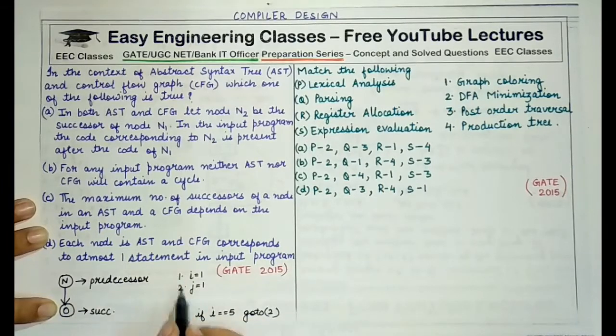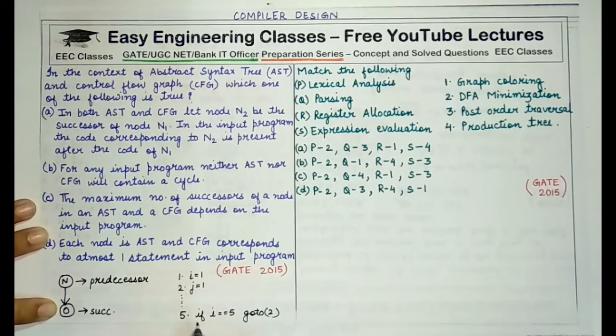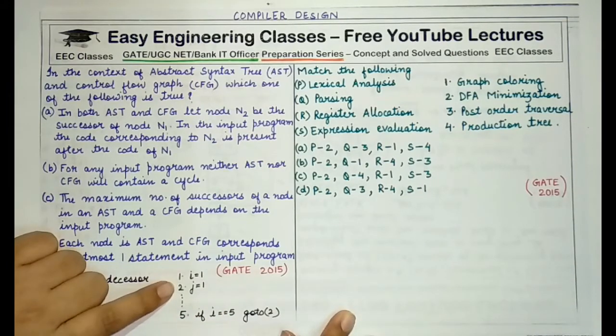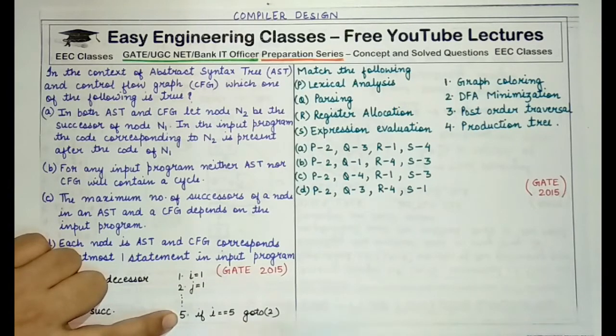Now this means that when I draw the control flow graph of this particular program, node 5 is appearing after node 2. But after executing node 5, if this condition is true, there would be an edge from 5 to 2. That means although the code of node 2 is appearing before the code of node 5, still there is an edge from node 5 to node 2. That means node 2 is the successor of node 5.